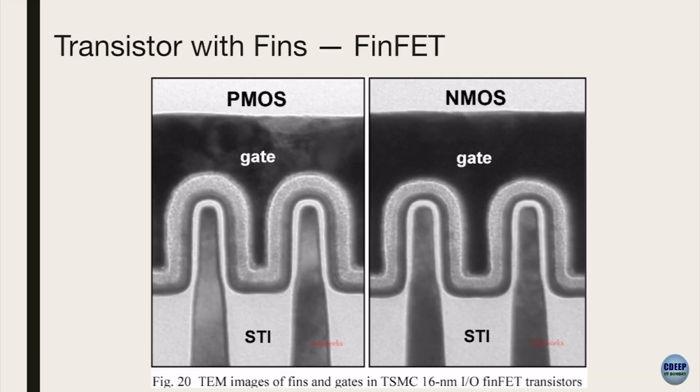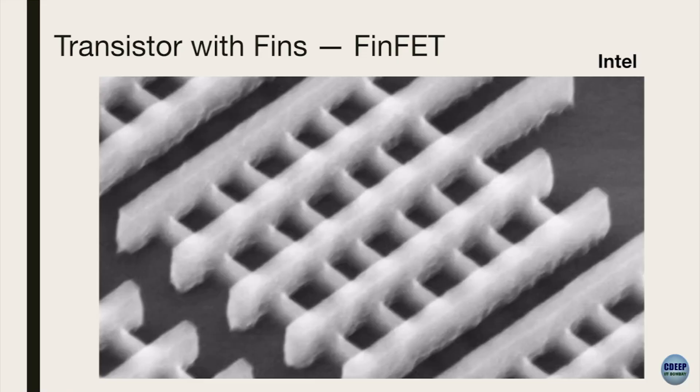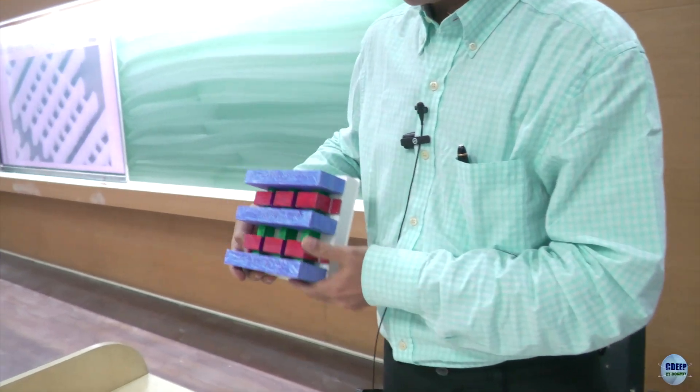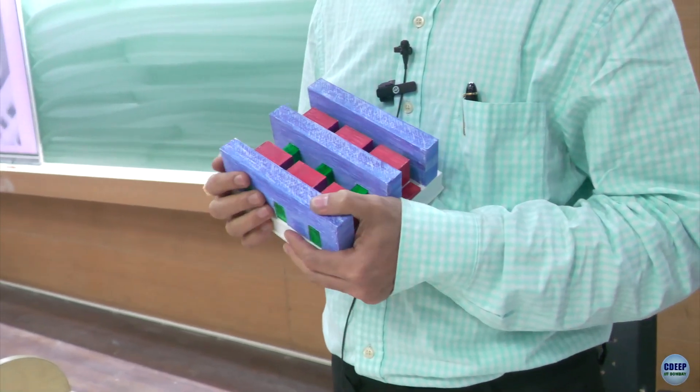Here is the cross section of the real FinFET transistor. You can see the zigzag piece — NMOS and PMOS. And here is a real picture of a chip — it almost looks like a waffle. I love Belgian waffles. Each crossover is a transistor. So we can pack more and more in the same die area.